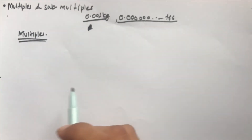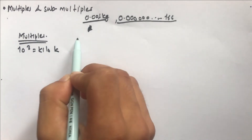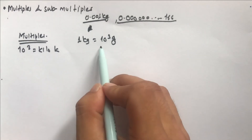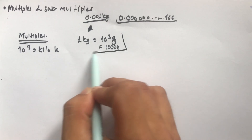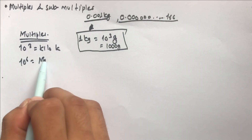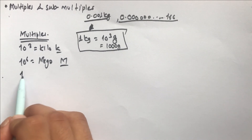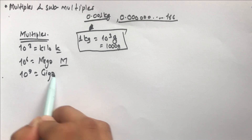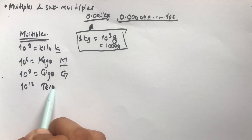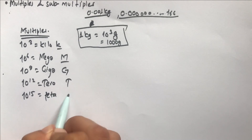For multiples: 10³ is kilo (k) — one kilogram equals 10³ grams, which is 1000 grams. 10⁶ is mega (M). 10⁹ is giga (G). 10¹² is tera (T). 10¹⁵ is peta (P).